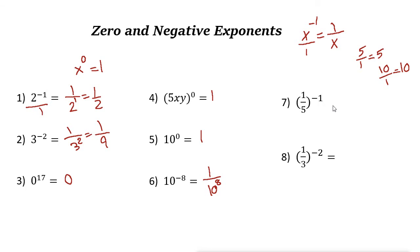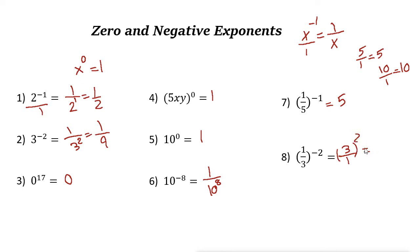For 1 over 5 to the power of negative 1, we want to make the power positive, so we flip the fraction: 1 over 5 becomes 5 over 1, which is just 5. For 1 over 3 to the power of negative 2, flip the fraction: it becomes 3 over 1 to the power of positive 2, which is 3 squared, and the answer is 9.